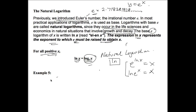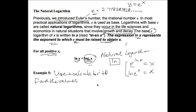Let's use a calculator to find some values. Part A: ln of e to the 4. We don't need a calculator for this because ln undoes the e, so that would simply be 4.